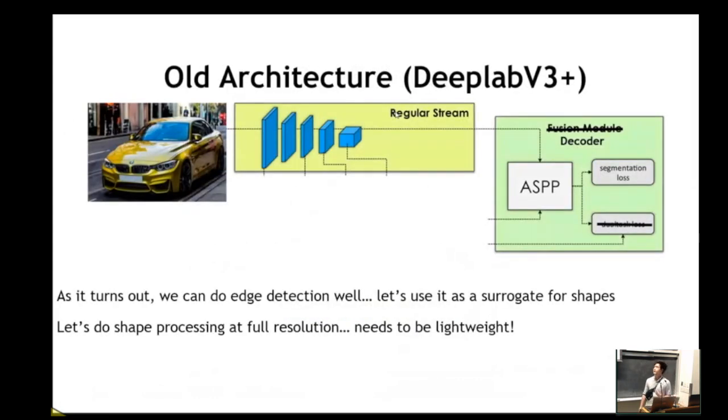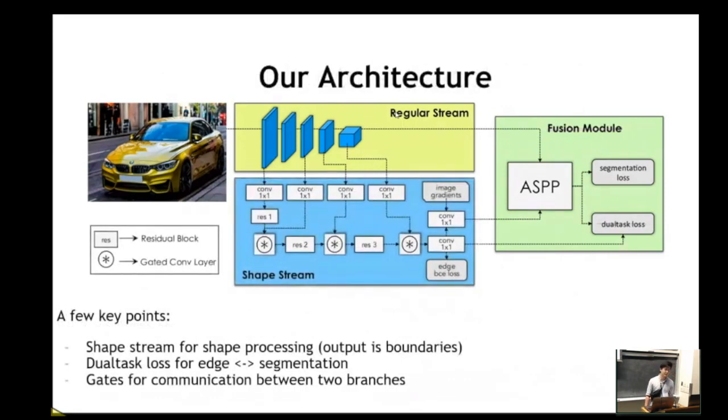So this is what a typical DeepLab V3 Plus architecture, which is one of the state-of-the-art architectures in segmentation, looks like. It has a cascading feature extractor, which then gets fed into a multi-scale feature extractor, the ASPP. And that's it. We propose that we basically add another branch to this network to force that branch of the network to process shapes using edge detection or boundary detection as a proxy for shape processing. We fuse those features with the regular features for our final segmentation. And this is our proposed architecture.